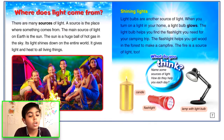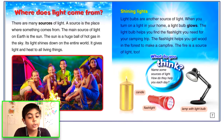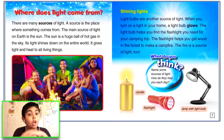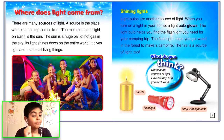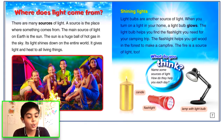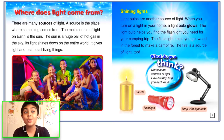That is why it becomes cold at night. Light bulbs are another source of light. When you turn on the light in your home, the light bulb glows. The light bulb helps you find the flashlight you need for your camping trip. The flashlight helps you get wood in the forest to make a campfire. The fire is a source of light too.